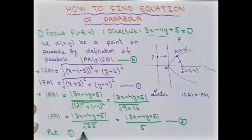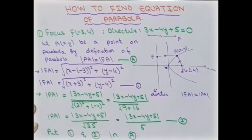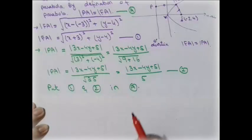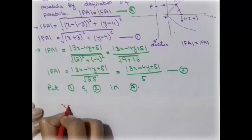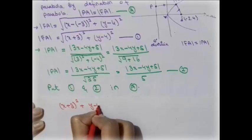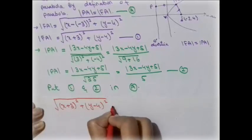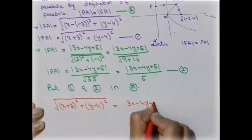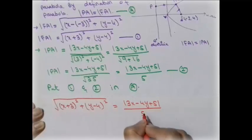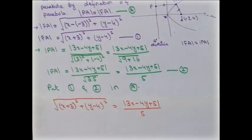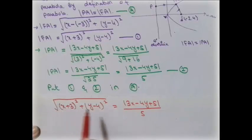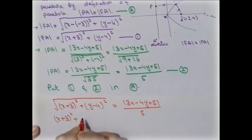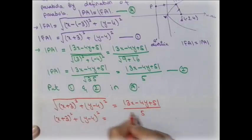I now put both equations equal to each other. Setting FA equal to PA gives: the square root of (x + 3)² + (y − 4)² equals |3x − 4y + 5| divided by 5. In the next step, to get rid of the radical sign, we square both sides, giving (x + 3)² + (y − 4)² equals (3x − 4y + 5)² divided by 25.